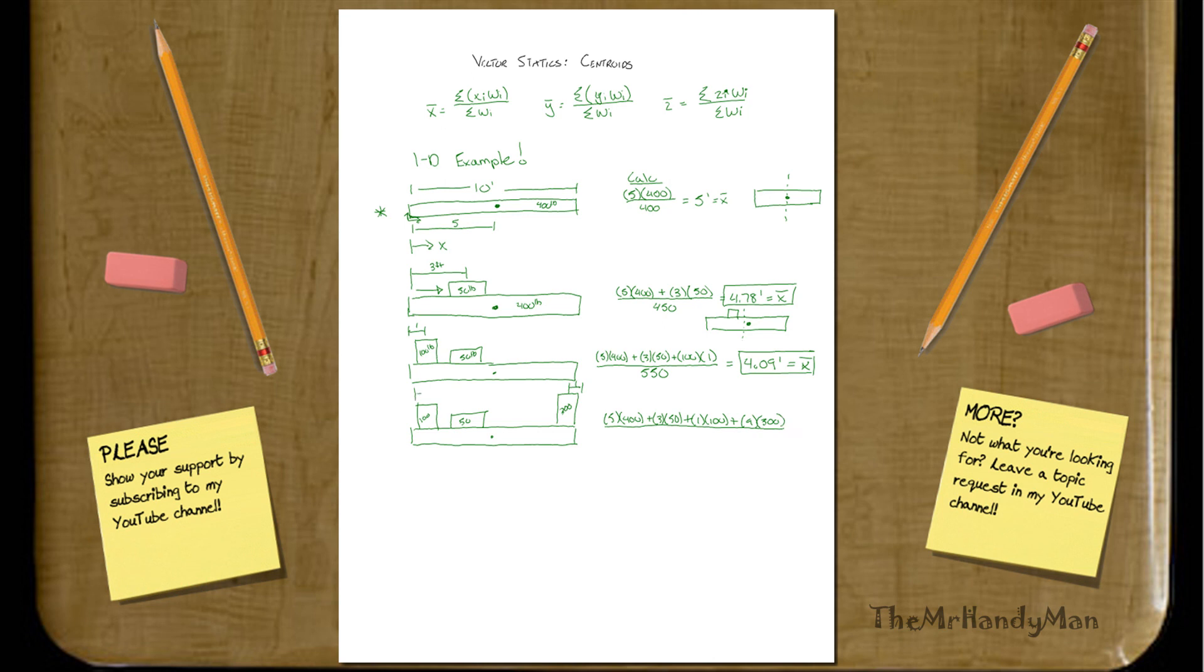That would be 5 times 400 plus 3 times 50 plus 1 times 100 plus 9 times 300. And it's 9 because we have to make sure that we always do our measurements from this same reference point, which would be 9 from here. All over the total weight, which is 850 pounds. When you work that out, you'll have 5.82 feet, which means that it has gone past the centroid point. It's no longer there. It's somewhere past there. Because that was actually 300 pounds, much more heavy.